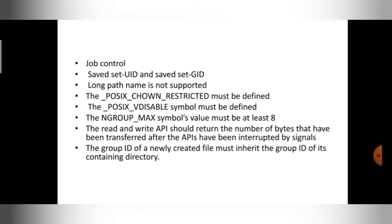Next, POSIX_V_DISABLE symbol must be defined. If you want to remove the special effects of particular keys, that should be possible, which is why you should use POSIX_V_DISABLE. For example, if you press a bracket key, angular brackets are displayed; if you press Shift plus bracket, flower brackets are displayed — that is a special effect. You can disable this type of special behavior using POSIX_V_DISABLE.